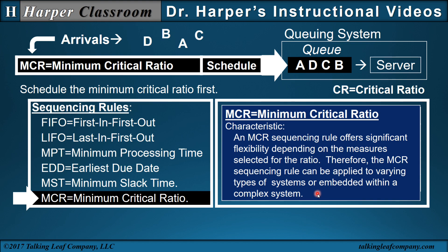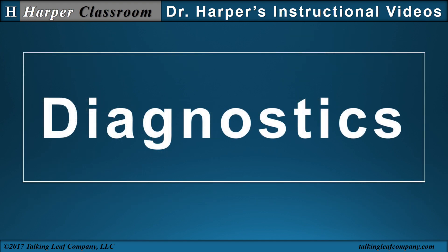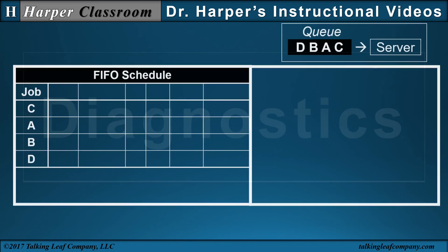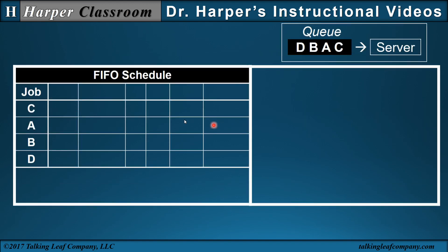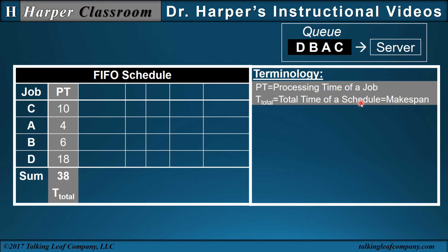Examples of this will be given in class. Now that we have all six sequencing rules, let's look at the diagnostics. We start with the FIFO schedule: C, A, B, D. We sum the processing time to get the total processing time. Another word for the total processing time of a schedule is the make-span.